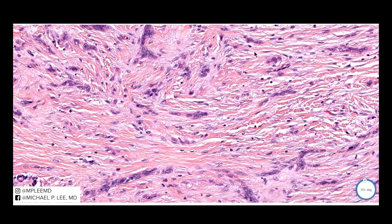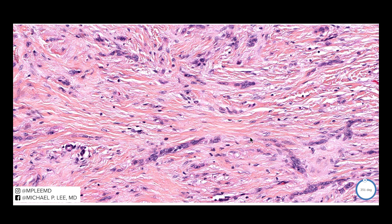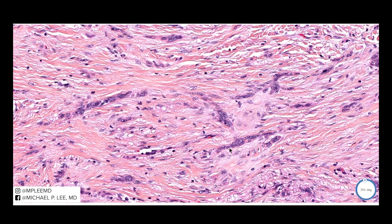Differentiating this from a trichoepithelialoma — if you remember from the tricho-ep from Wednesday, we saw, first of all, the horn pseudocysts with the calcifications. And in the desmoplastic cord-like growth pattern, it was usually a little wider than this. Oftentimes it had that sort of fibrostroma, which was CD34 positive. The fibrostroma would show clefting, similarly to what you would see in a regular trichoepithelialoma. But in this one, there's really not much clefting at all.